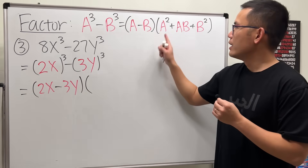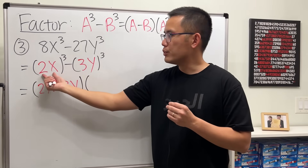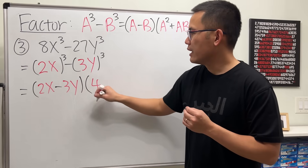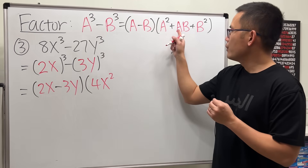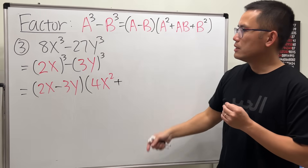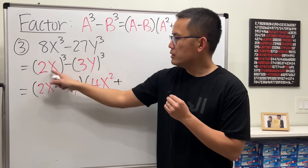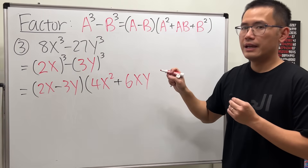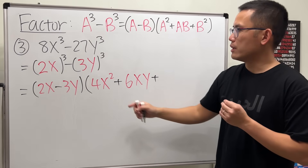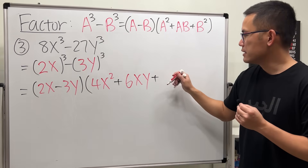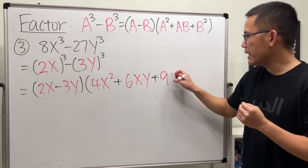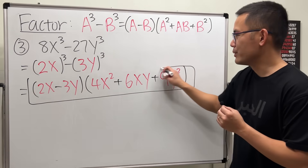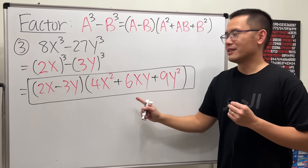For the second factor, we square the a: 2 squared is 4, giving us 4x squared. Then we add ab: 2 times 3 is 6, giving us 6xy. Lastly we add b squared: 3 squared is 9 and we square the y, giving us 9y squared. This is the answer — do not try to factor the second factor further, it is not factorable.